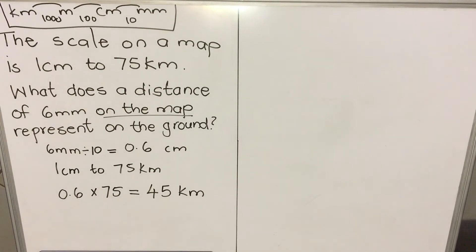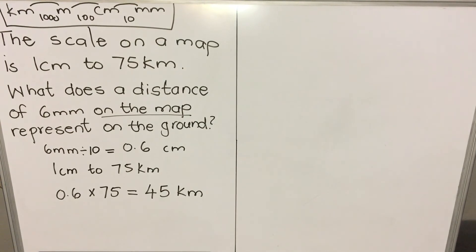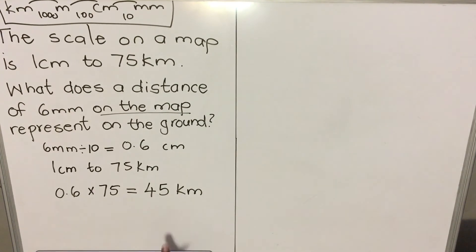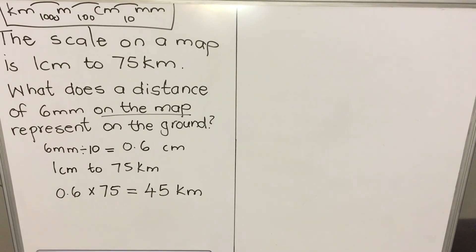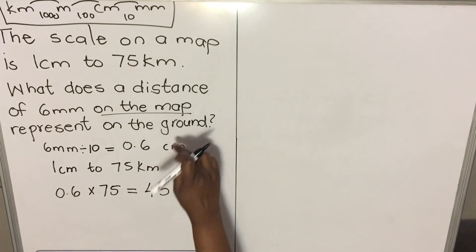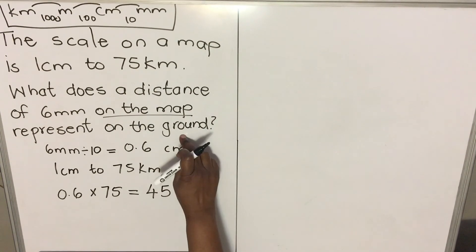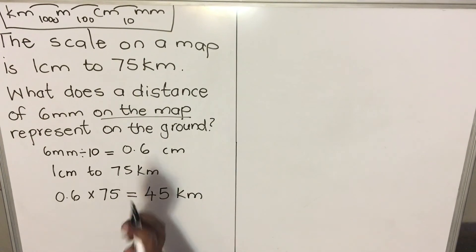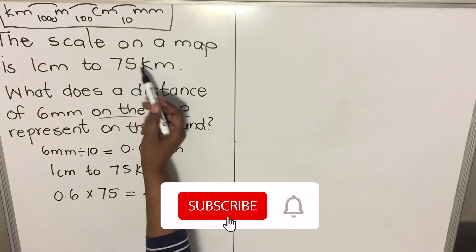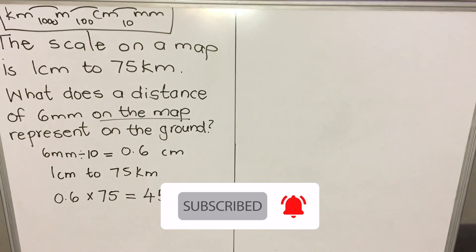And that is how you do it — 75 kilometers. Just remember: when you are given a map distance and converting to the ground, you multiply by the scale. When you are given the ground distance and converting to the map, you divide by the scale. Thank you for watching — this is the end of our lesson.